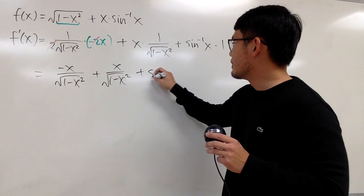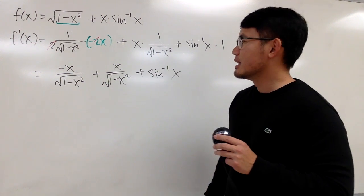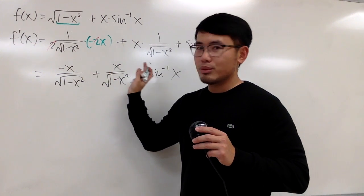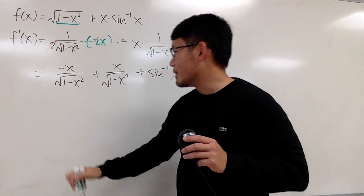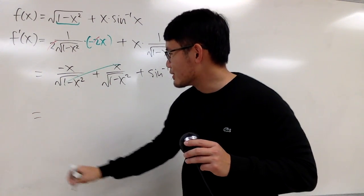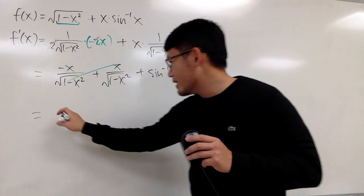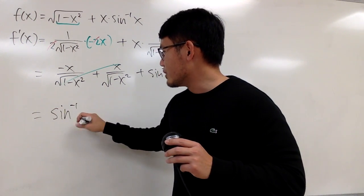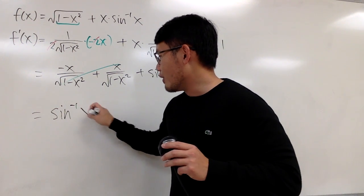Anyway, in the end, here, we have the inverse sine of x, and then, of course, this and that, they pretty much become zero, so you can just cancel them out. So, yeah, so in the end, let me just cross this out. This right here. Here, we end up very nicely to get the inverse sine of x, right?